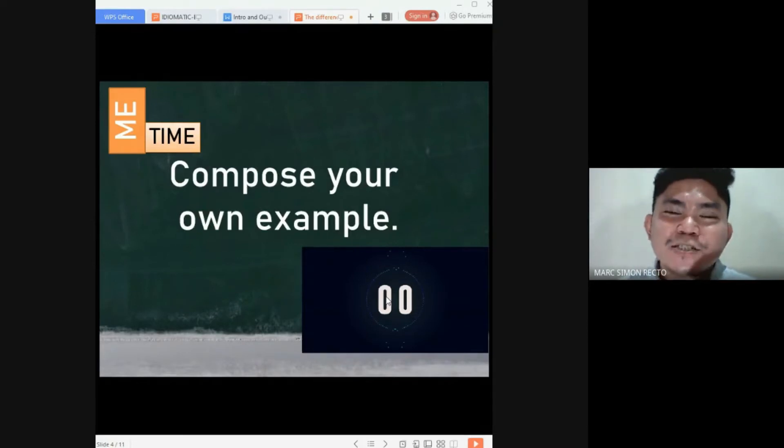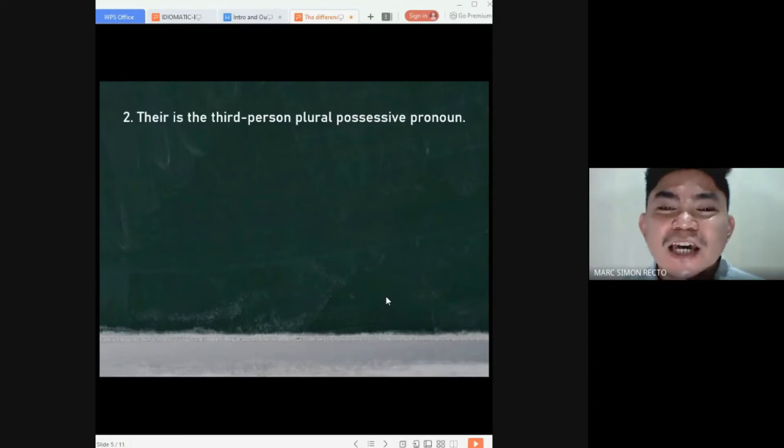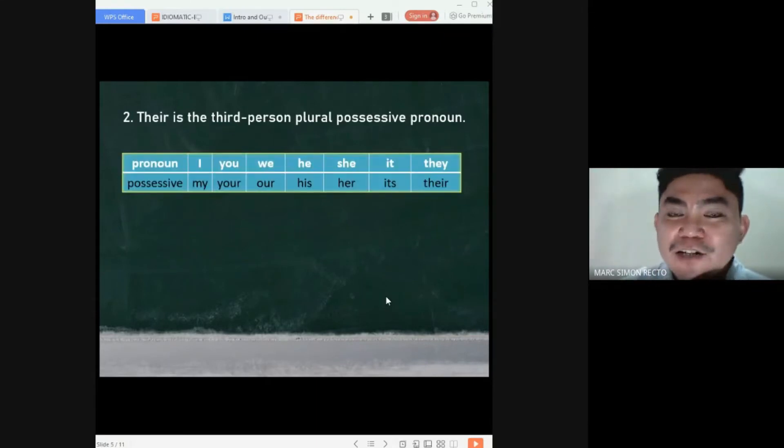I'm pretty sure that you're ready for the next word. The next word is there, spelled as T-H-E-I-R, which means the third-person plural possessive pronoun. Possessive. What does it mean? It may refer to the expression of showing ownership or relationship. I have here a table to fully understand what it means. We have here a table with the counterparts of every pronoun.